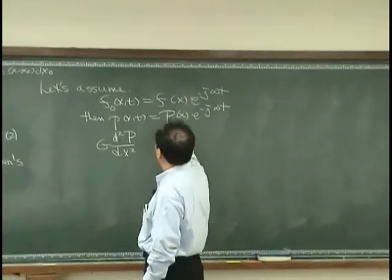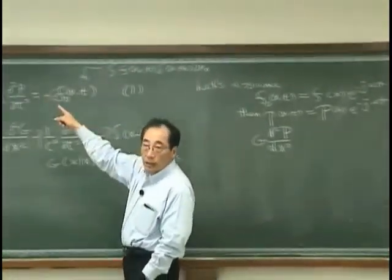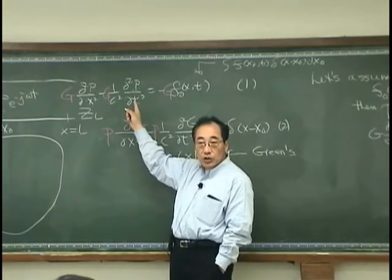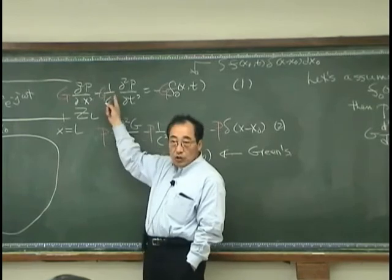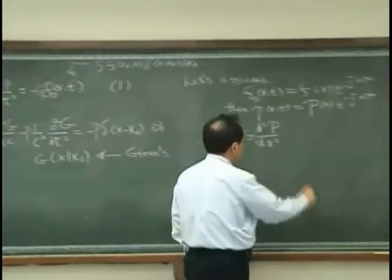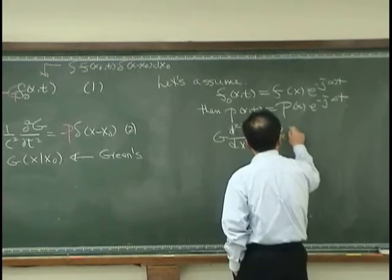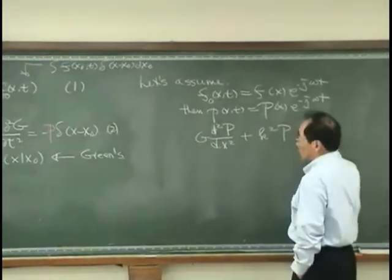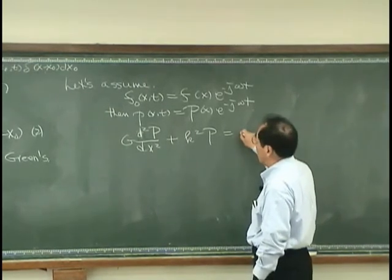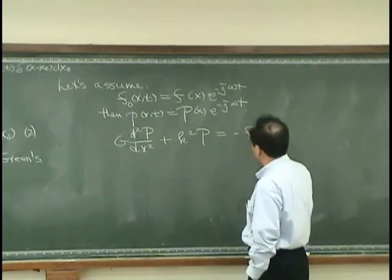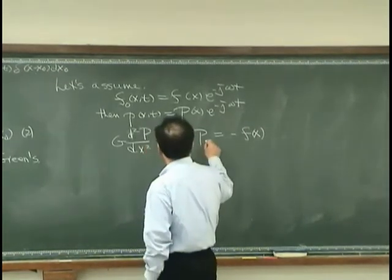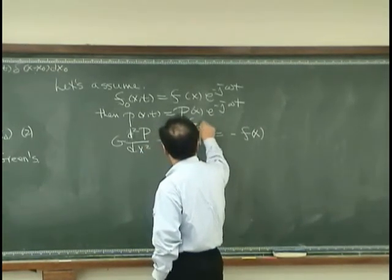Then what I have, p d²p/dt² give me minus ω². And ω²/c² is k², minus makes plus. So I have k² capital P, that has to be equal to minus f(x). And I have g over here.